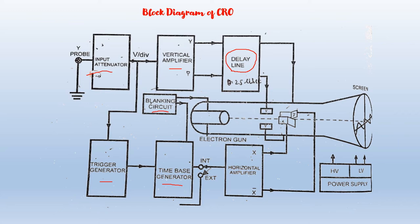The important block is the Power Supply. The high-voltage section is used to operate the CRT, and the low-voltage section is used to supply the electronic circuits of the oscilloscope. The heart of the CRO is the CRT. CRT consists of an electron gun, deflection plates, and a fluorescent screen.